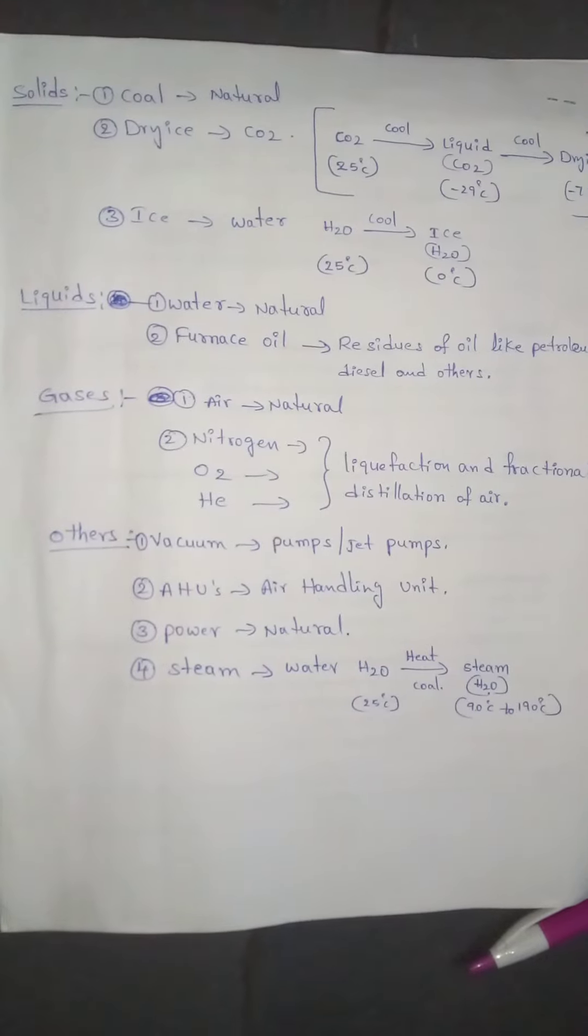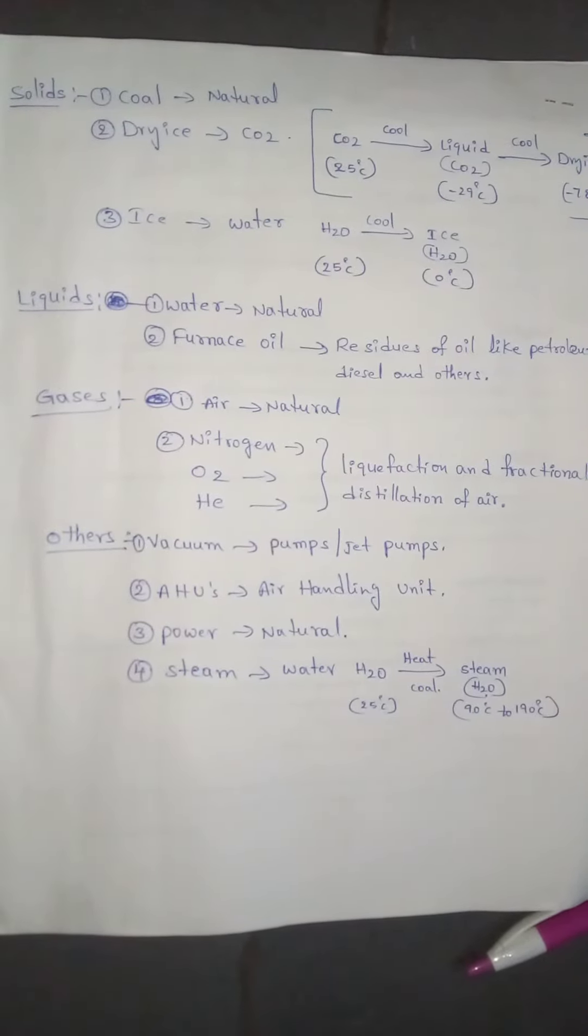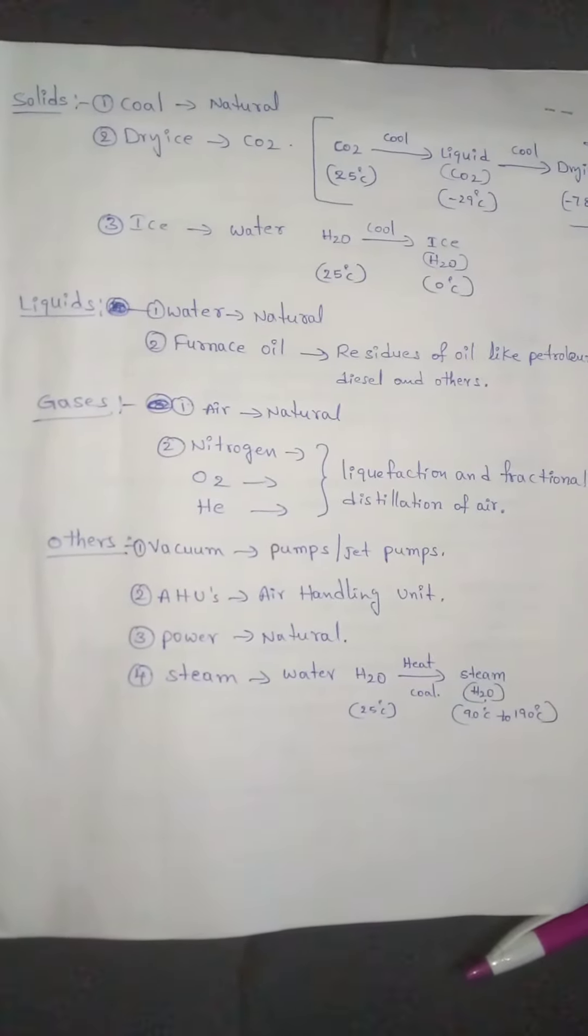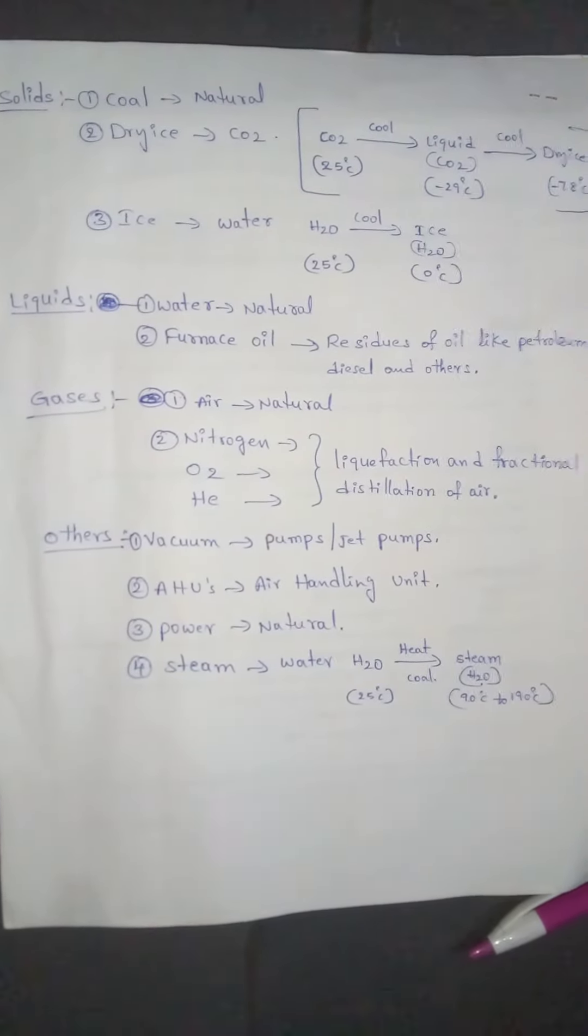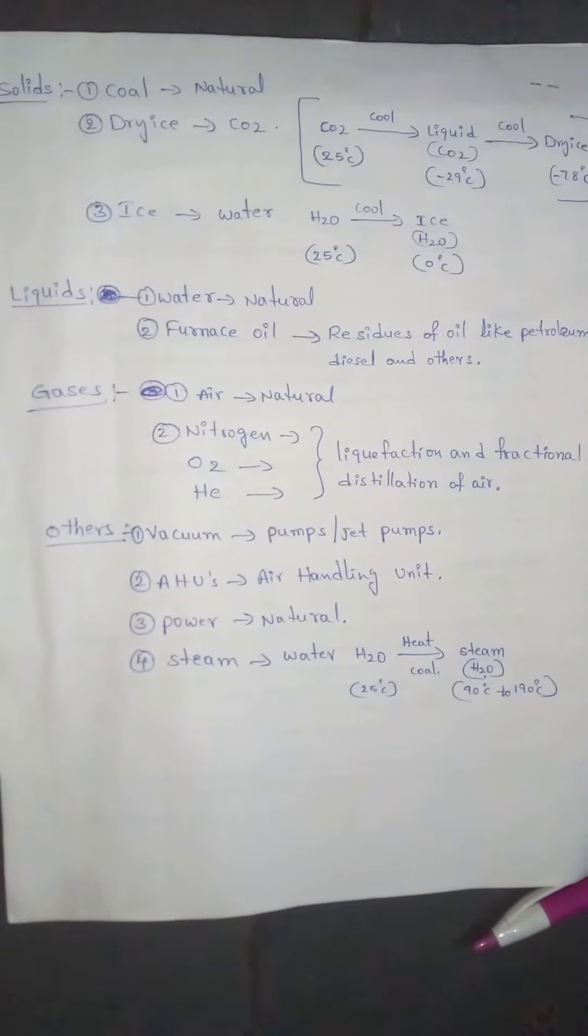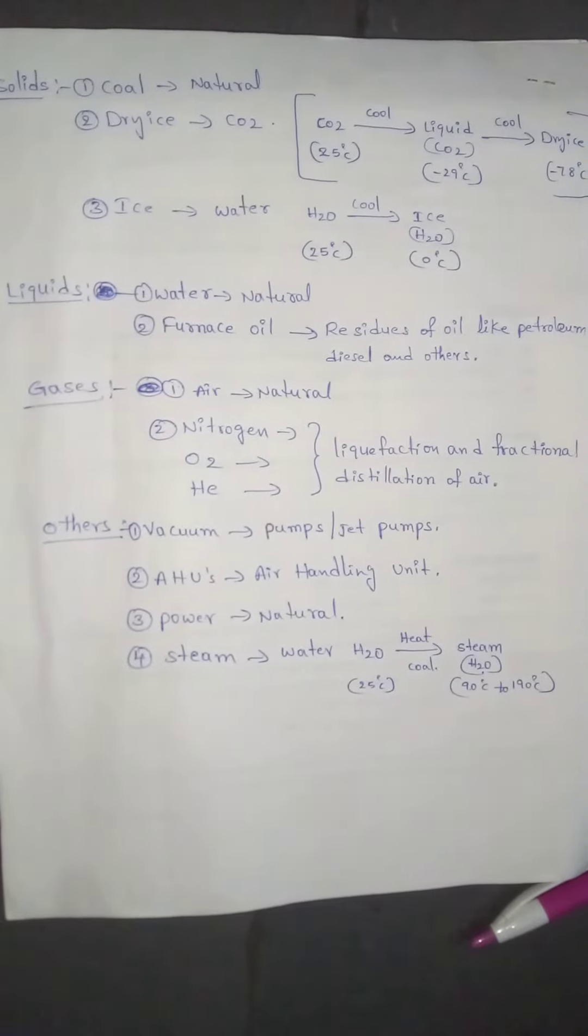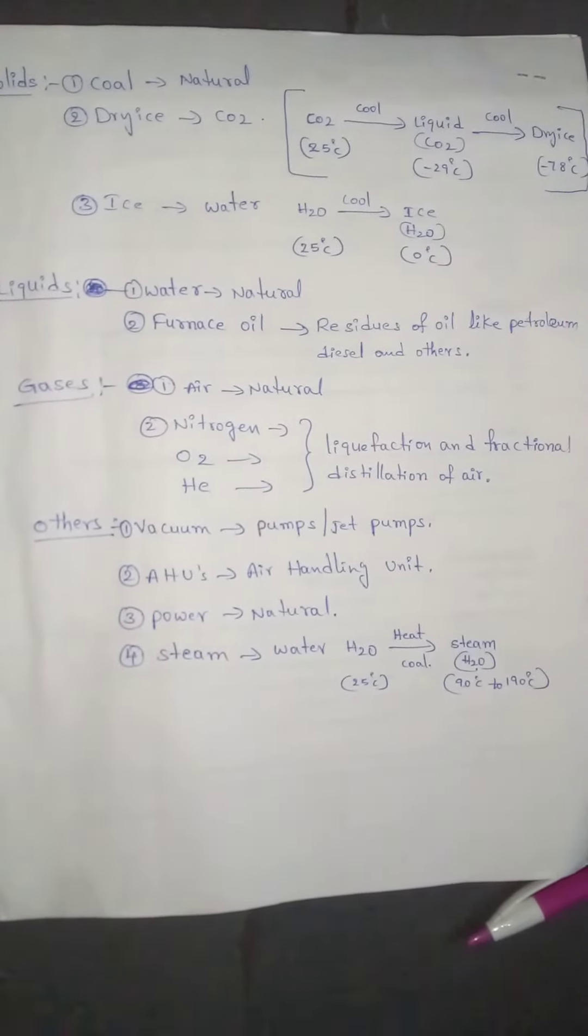Solids: coal, dry ice, ice. Coal is naturally occurring. Dry ice is natural, extracted from natural gas as carbon dioxide.